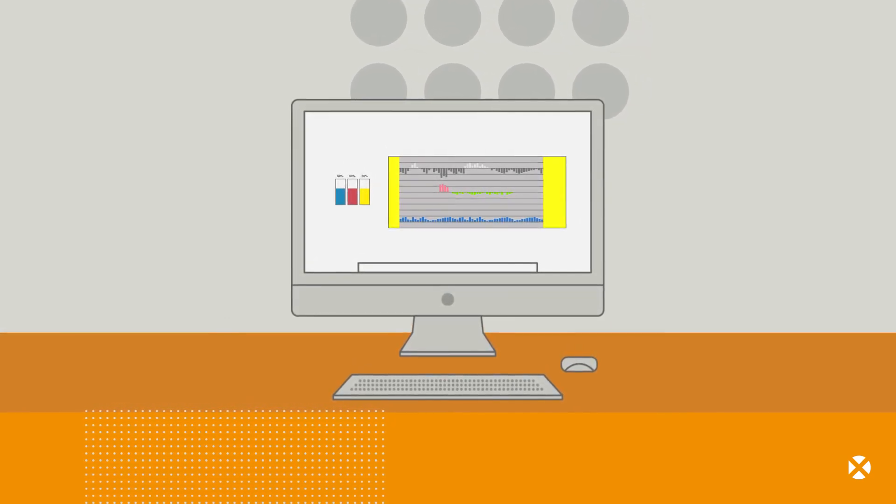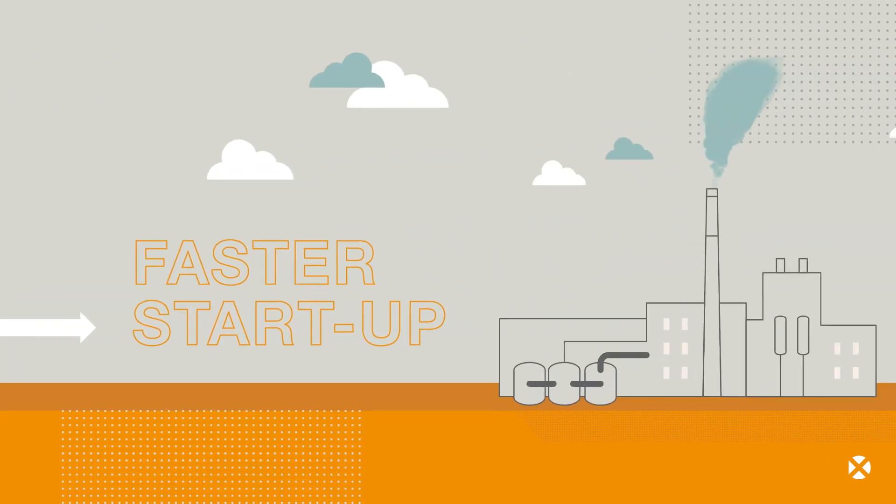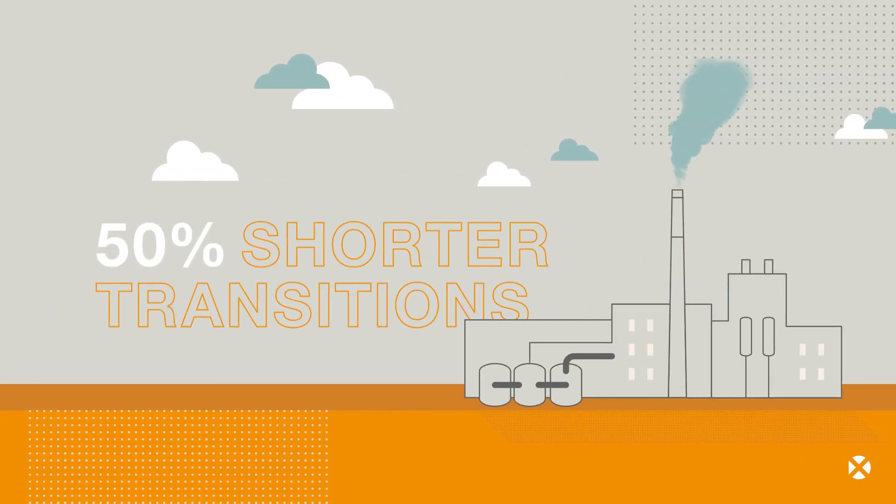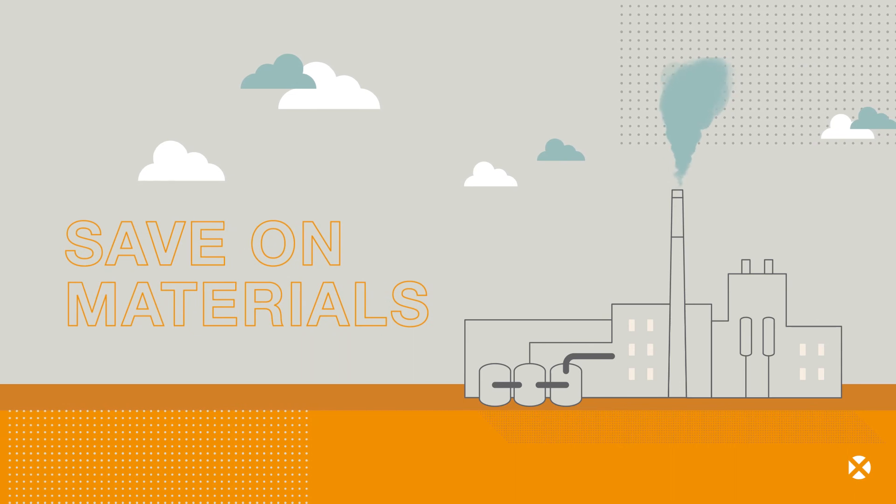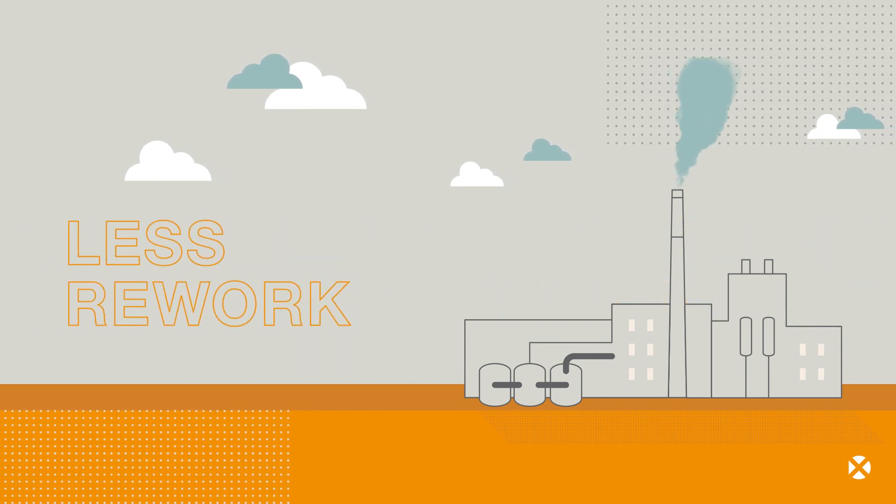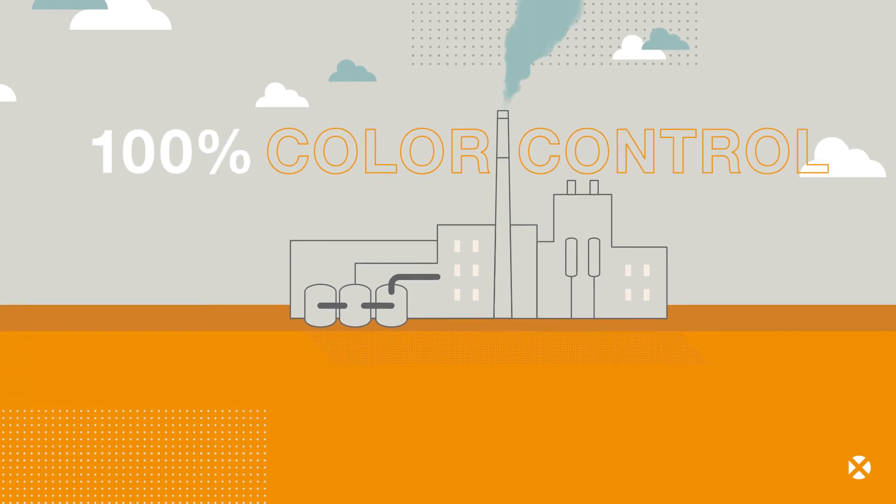No need to shut down production. Paper mills can achieve much faster startup times, 50% shorter transition times, save on dye usage and other materials, and experience less rework, providing 100% color control.